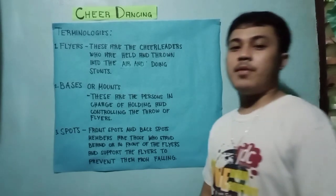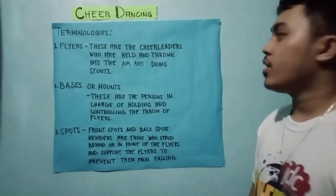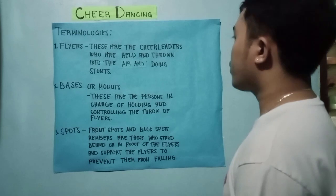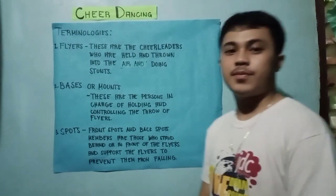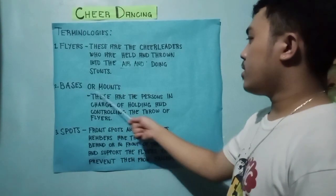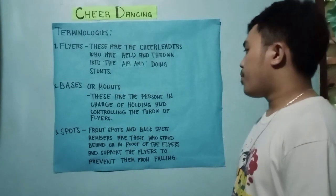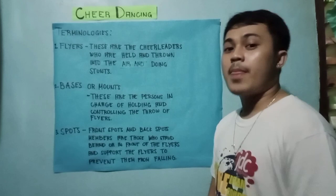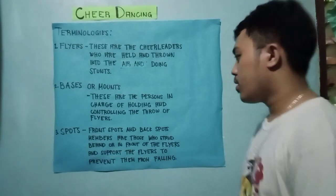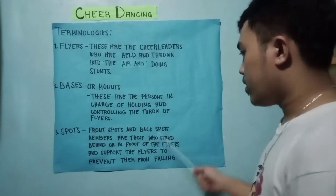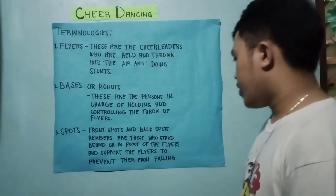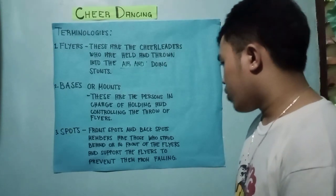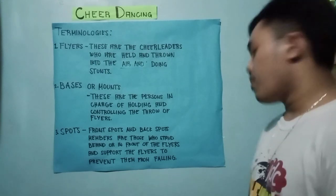In cheer dancing, we have the following terminologies. Number one, flyers — these are the cheerleaders who are held and thrown into the air while doing stunts. Number two, bases or mounts — these are the persons in charge of holding and controlling the throne of flyers. Number three, spots — front spots and back spots members are those who stand behind or in front of the flyers and support them to prevent them from falling.